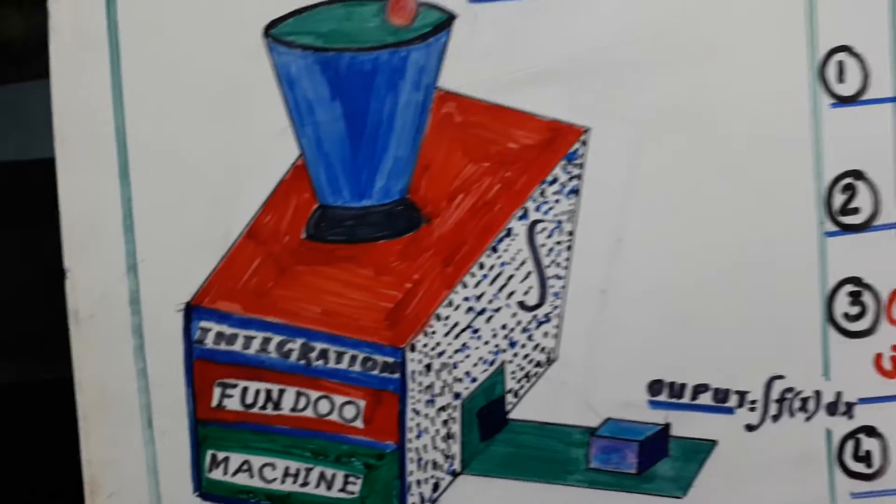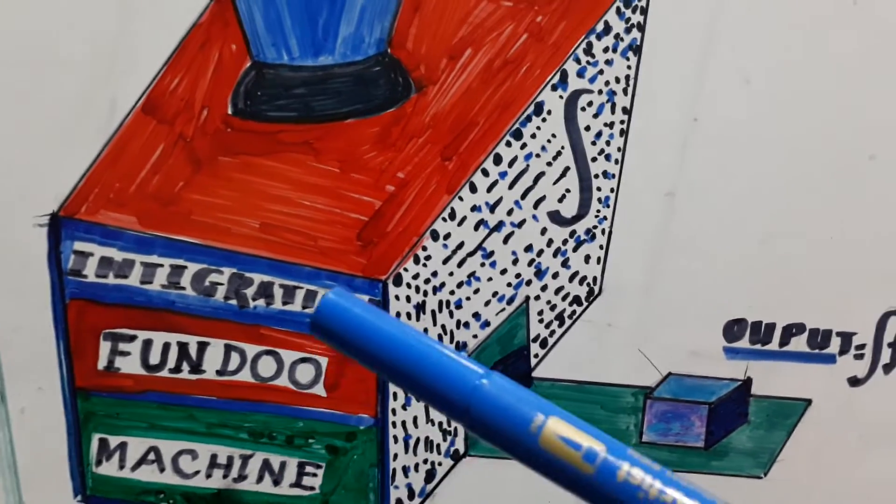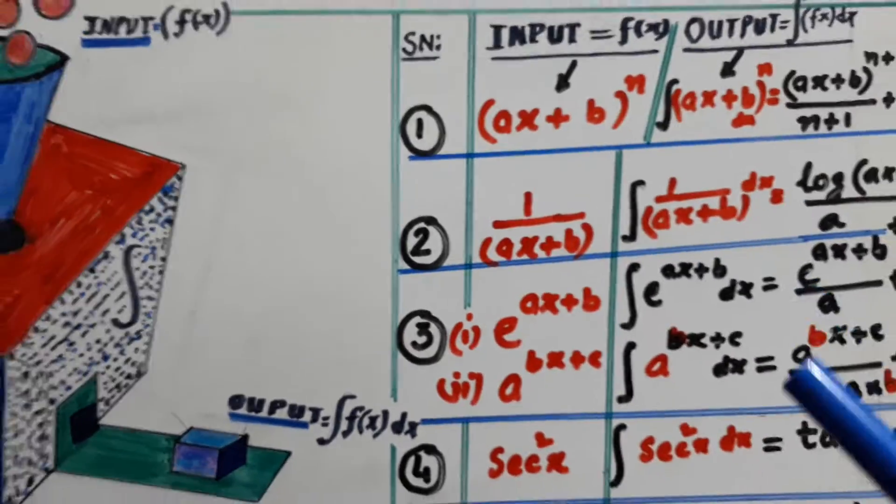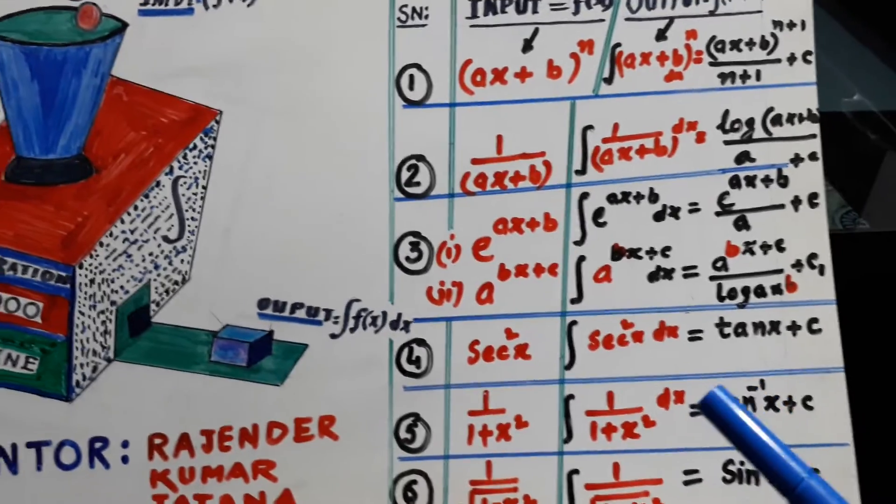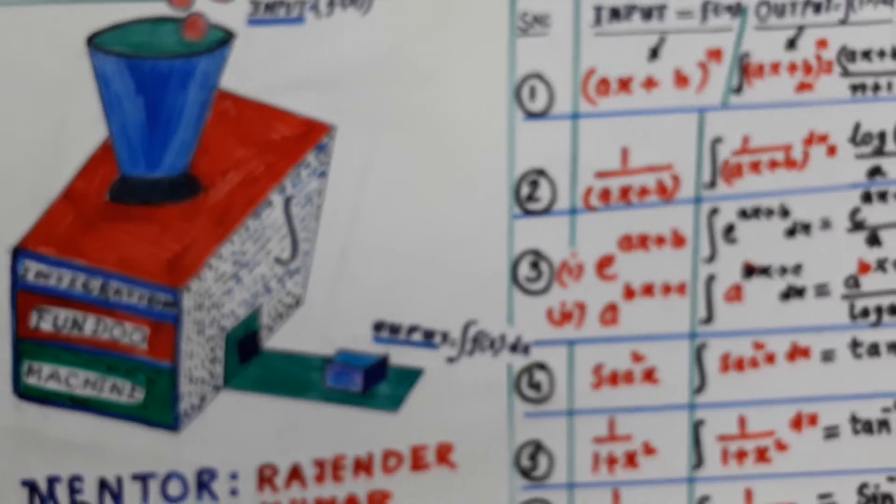Look here, this integration fundu machine is a new way of finding the integration. But I will say it is the same: old wine in new bottle. It's the same thing, but there is a new presentation of this.